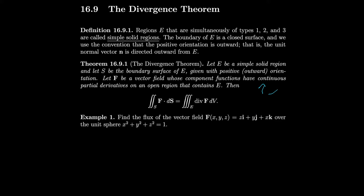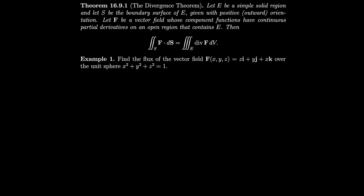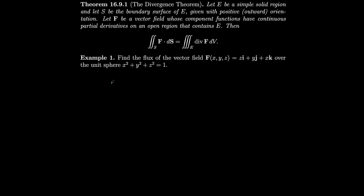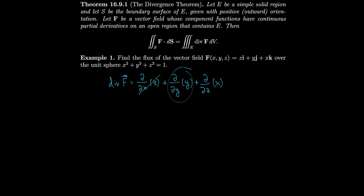Let's do an example. We want to find the flux of the vector field zi + yj + xk over the unit sphere x² + y² + z² = 1. Using the divergence theorem, the divergence of f is the partial derivative with respect to x of z, plus the partial with respect to y of y, plus the partial with respect to z of x. That gives 0 + 1 + 0, which is 1.